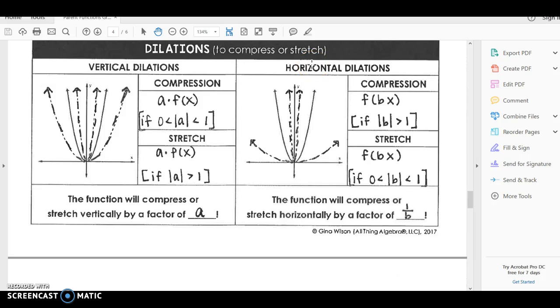Horizontally, so we're talking about the x, so b, we're using b for this variable. Again, it's just a variable, it doesn't matter. When b is inside here, that means it's horizontal, and when b is greater than one, it's a compression. And when b is between zero and one, or when it's a fraction, then it's a stretch.